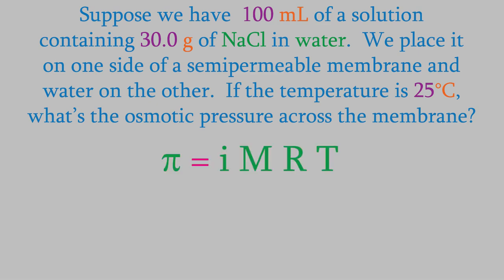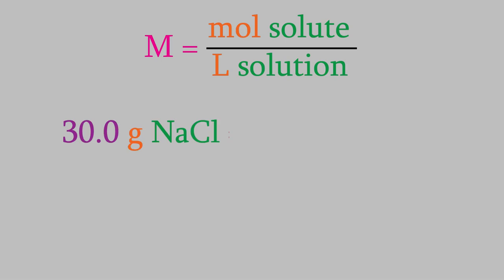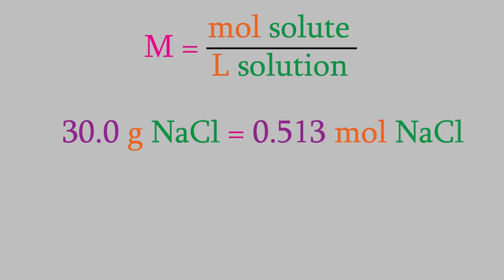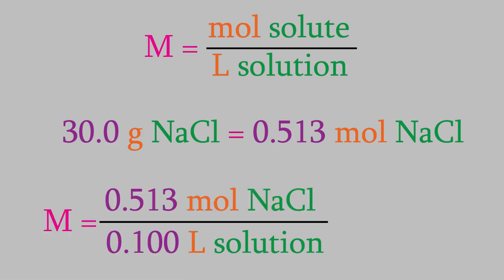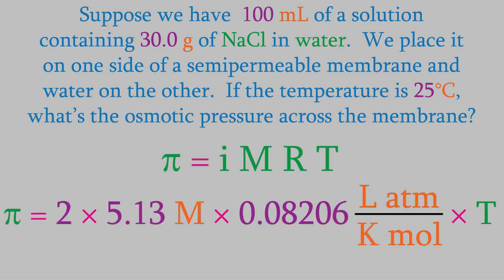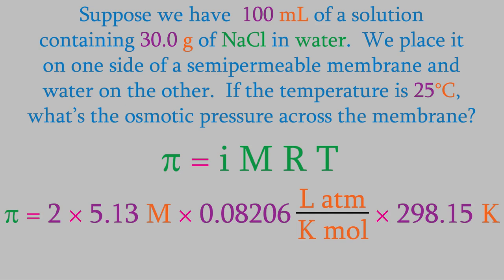For this problem, we'll use the equation we just learned for osmotic pressure. The van't Hoff factor tells us how many particles we'll get for every solute molecule. Since NaCl breaks up into two ions, the van't Hoff factor is 2. For M, we need to calculate the molarity. We have 30.0 grams of sodium chloride. Using the periodic table, we find that this is 0.513 moles. We have 100 milliliters of solution, which is 0.100 liters, and that gives us a molarity of 5.13 M. R is the gas law constant I mentioned earlier, and T is the temperature. Don't forget to convert it into kelvins. Solving the equation gives us an osmotic pressure of 251 atmospheres, a very high pressure.